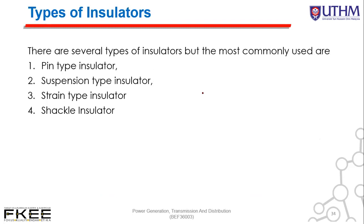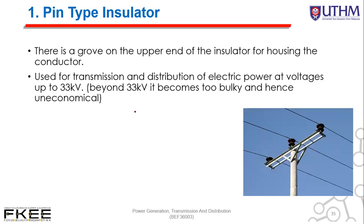There are four types of insulators: pin type, suspension type, strain type, and shackle insulator. The pin type insulator has a groove on the upper end for housing the conductor. It is used for transmission and distribution of electric power at voltages up to 33 kV only. Beyond 33 kV it becomes too bulky and hence uneconomical.